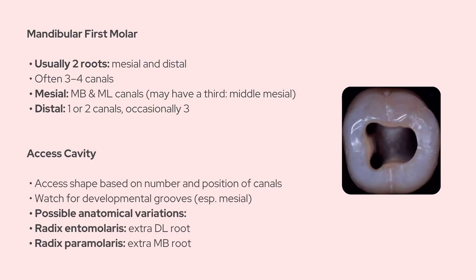Moving on to the mandibular molars, starting with the first molar, which is the most commonly treated tooth in endodontics. It usually has two roots — mesial and distal — and often presents with three or four canals. In the mesial root, you'll typically find a mesiobuccal and a mesiolingual canal, and sometimes a third canal in between called the middle mesial. The distal root can have one, two, or occasionally even three canals.